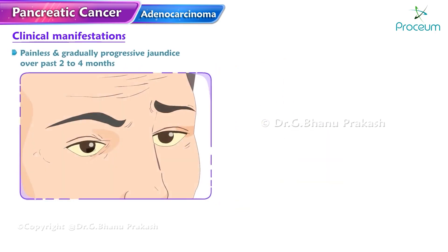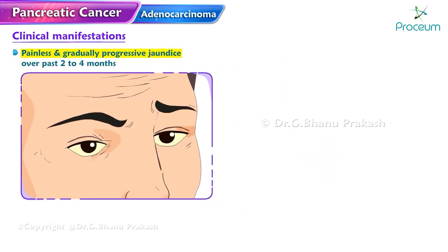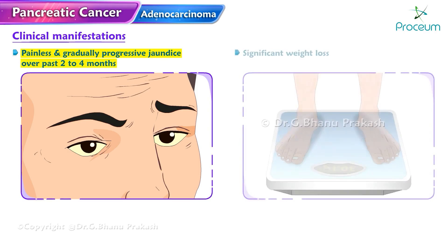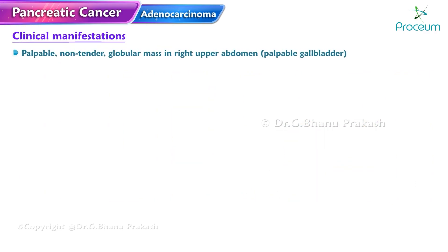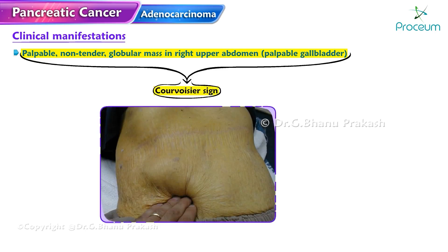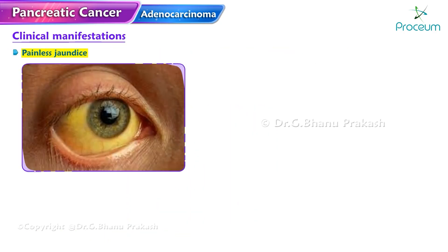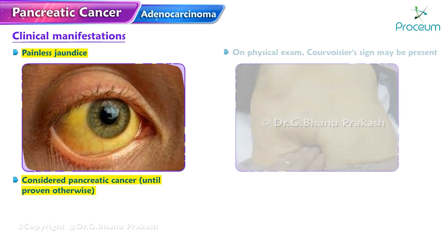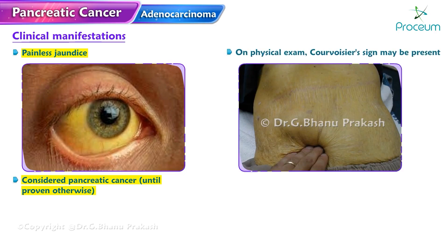A clinical presentation of painless, gradually progressive jaundice over two to four months, significant weight loss, and a palpable non-tender globular mass in the right upper abdomen — a palpable gallbladder — is known as Courvoisier's sign and indicates the most likely diagnosis of pancreatic adenocarcinoma. Painless jaundice is considered pancreatic cancer until proven otherwise. On physical exam, Courvoisier's sign may be present as a painless enlarged gallbladder accompanied by mild jaundice.